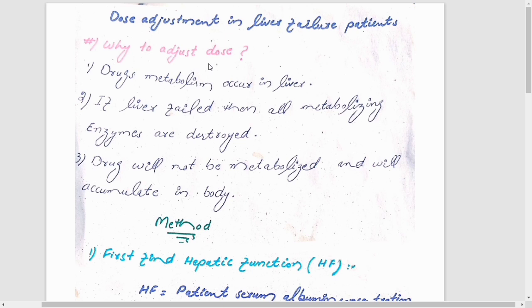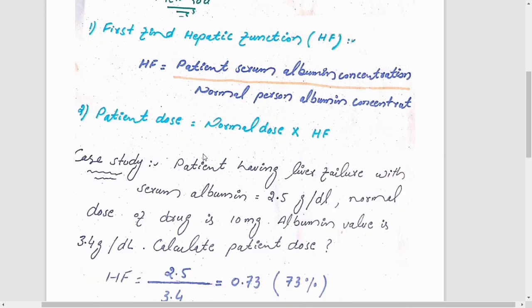That's why we need to reduce the dose if there is liver problem or liver failure. The first reason is that drug metabolism occurs in the liver, and if there is liver failure, then all the enzymes responsible for metabolism are almost destroyed or reduced in number. The third reason is the drug will not get metabolized and will accumulate in the body.